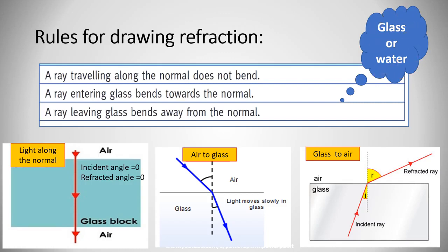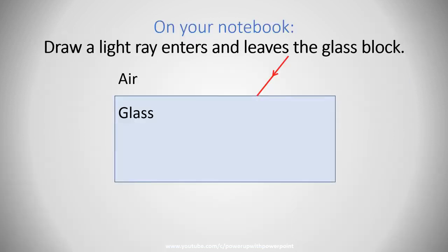Now, on your notebook, draw a light ray that enters and leaves the glass block. It will enter from air to glass and then to air again. That's the incident line or the incident ray. Give yourself four minutes to draw it, then reveal the result in the next slide.